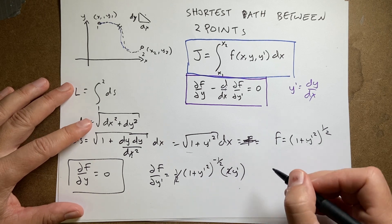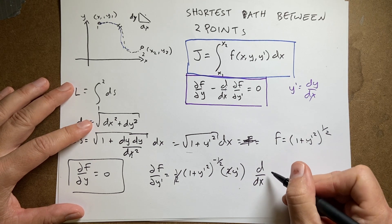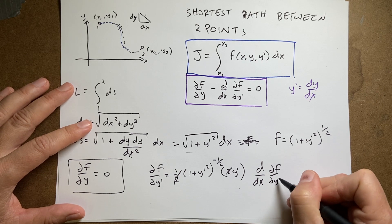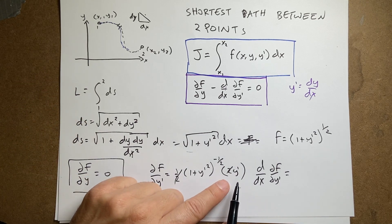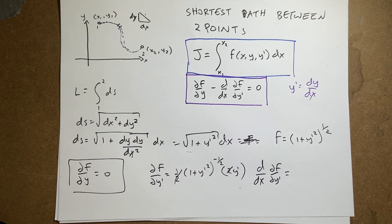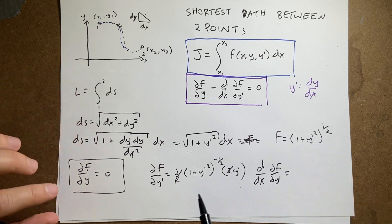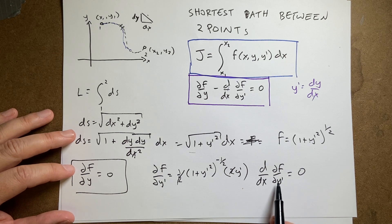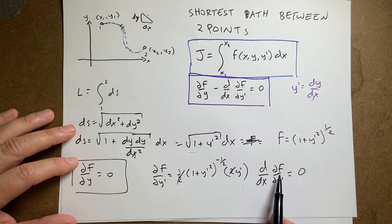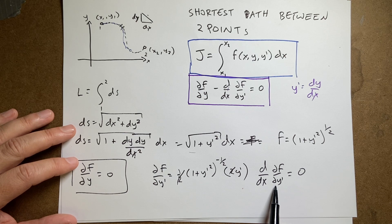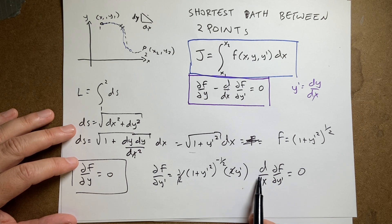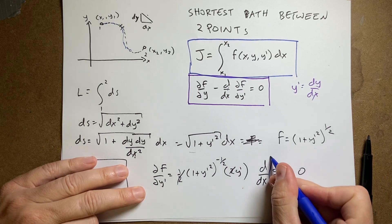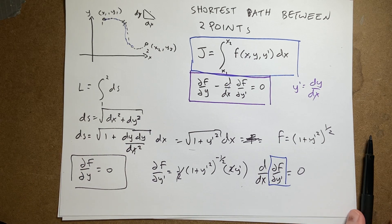So, now, I need to find d dx of the partial of f with respect to y prime. I could do that, right? And I would have to take the derivative of all these terms, but I'm not going to. Because I know this is, since this is 0, this is 0. The derivative of f with respect to y prime is 0, which means the partial of f with respect to y prime is a constant, right? If I take the derivative and I get 0, then this part right here has to be a constant.